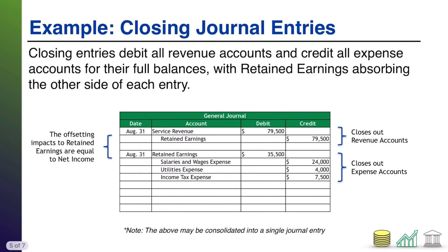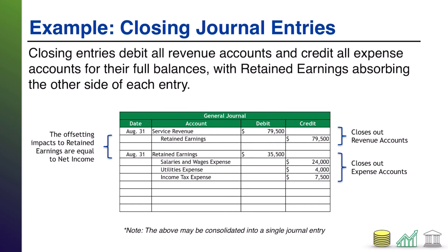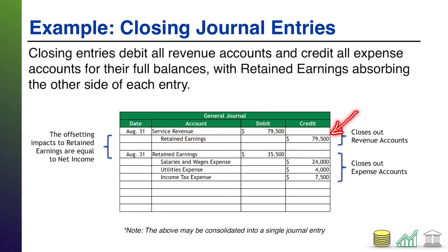Let's see it play out using the same accounts from the prior slide. To get rid of revenue, all we have to do is debit it by its full balance. On the other side of that journal entry, we credit retained earnings, which makes retained earnings go up — in this case by the full amount of revenue, not just profit. But we'll deal with that in just a moment. This closes out the revenue accounts.